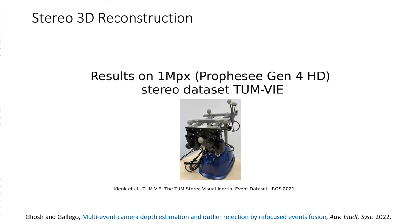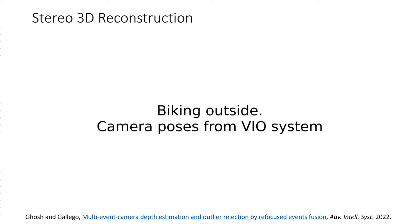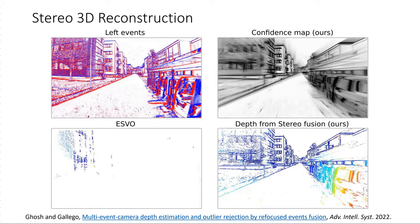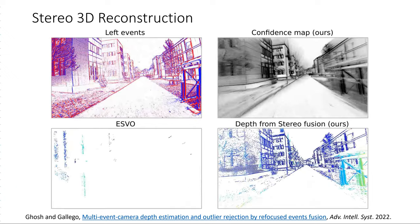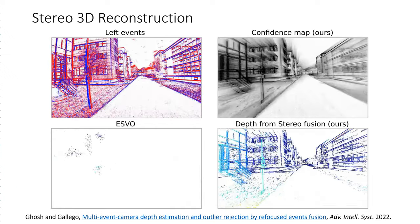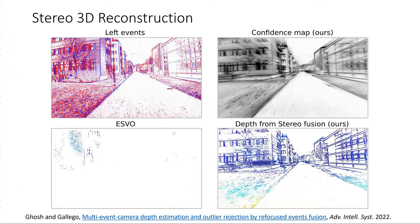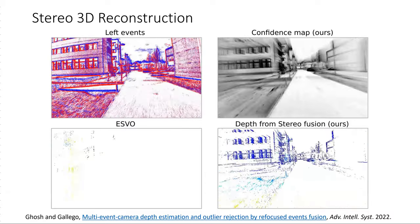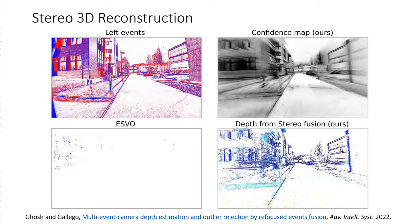We also report results on the head-mounted TUM VIE dataset, the only 1 megapixel stereo event dataset. This scene is acquired using cameras mounted on a biker's helmet. Without ground truth from a motion capture system, we pre-compute camera poses using a visual-inertial odometry algorithm. Even with noisy poses, we can recover cars, buildings, and trees remarkably well, while ESVO struggles with the high camera resolution.